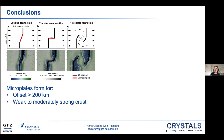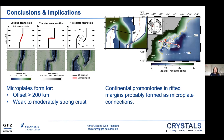To summarize what we've learned from the second set of models — from rift initiation to seafloor spreading: first, different types of rift connections form depending on the lateral offset of the approaching rifts — oblique, transform, and microplate connections. Second, there is a sweet spot for microplate formation for offsets larger than 200 kilometers and weak to moderately strong crust. Third, the presence of microplates can inform us on the strength of the crust at the time of formation. Finally, continental promontories in rift margins probably formed as microplate connections, and these modeled microplate kinematics can act as a template for other promontories worldwide like Porcupine and the Falkland Islands microcontinent.